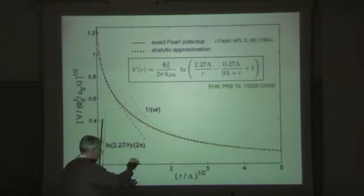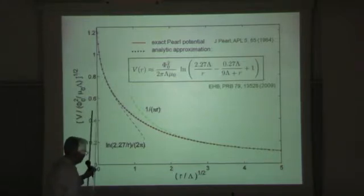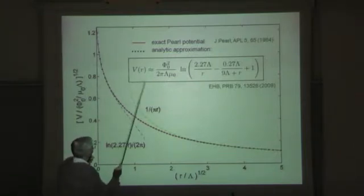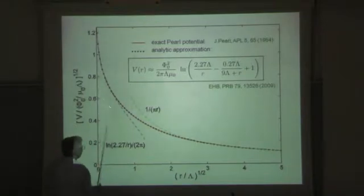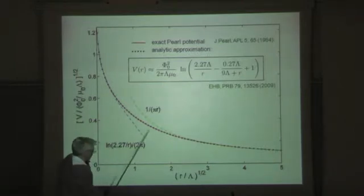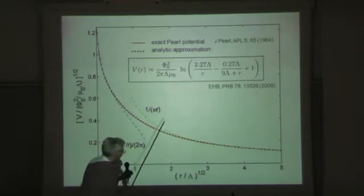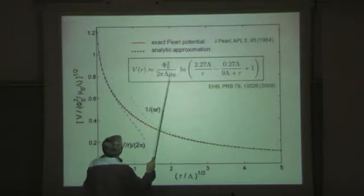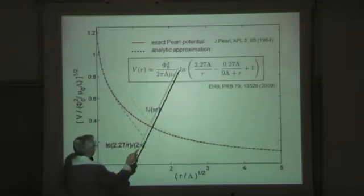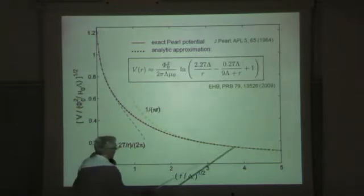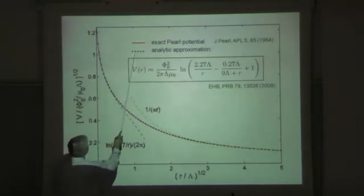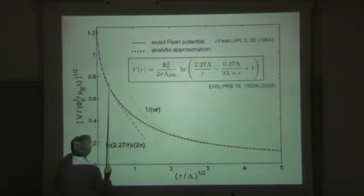A much simpler expression I found by chance — you can approximate. This is a numerical result of the integral in real space, and if you tabulate Pearl's analytic functions you would get the same. Here is an approximate expression in logarithm form. It reduces not only to the correct limiting cases, but is everywhere a very good approximation. The analytic approximation is shown alongside, and the exact potential is the red curve — they coincide.